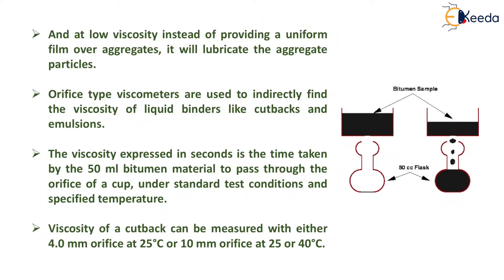At low viscosity, instead of providing a uniform film over aggregate, it will lubricate the aggregate particles. Orifice type viscometers are used to indirectly find the viscosity of liquid binders like cutback and emulsion. The viscosity expressed in seconds is the time taken by 50 ml of bitumen material to pass through the orifice of a cup under standard test conditions at a specified temperature. Viscosity of a cutback can be measured with either a 4 mm orifice at 25 degrees Celsius or a 10 mm orifice at 25 or 40 degrees Celsius.